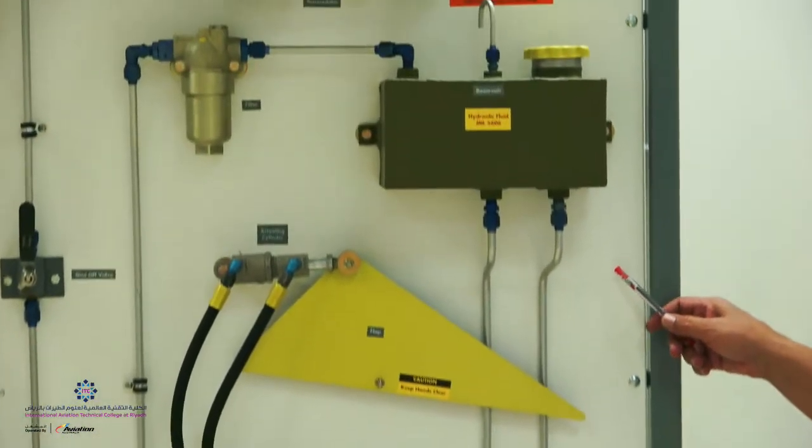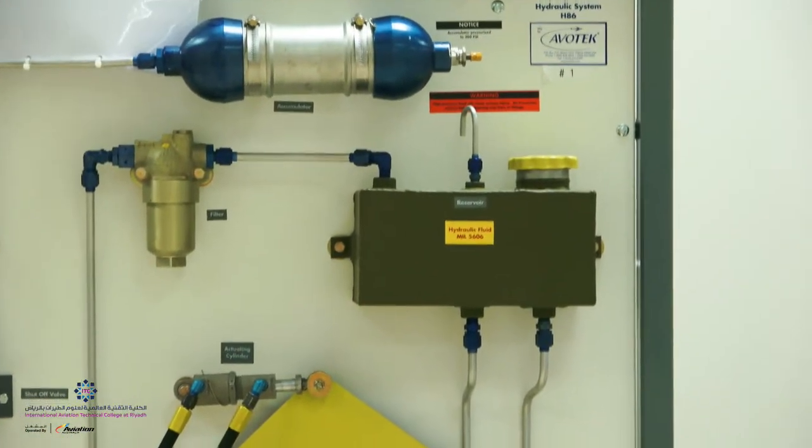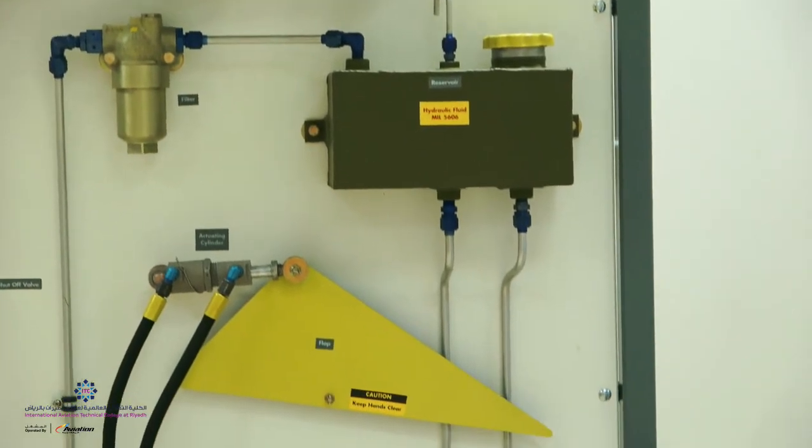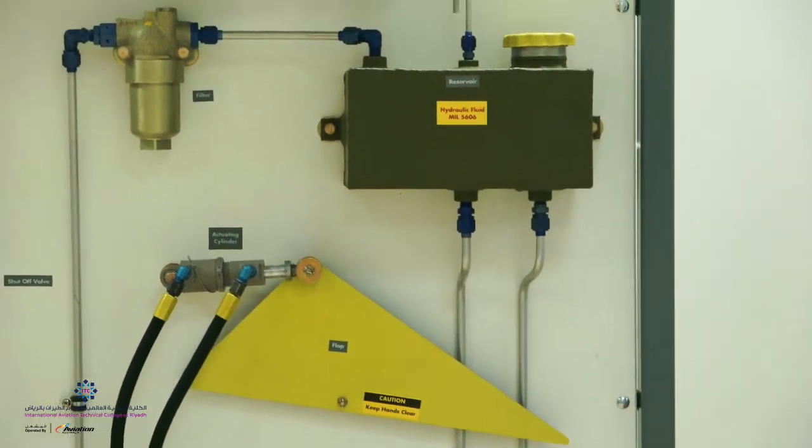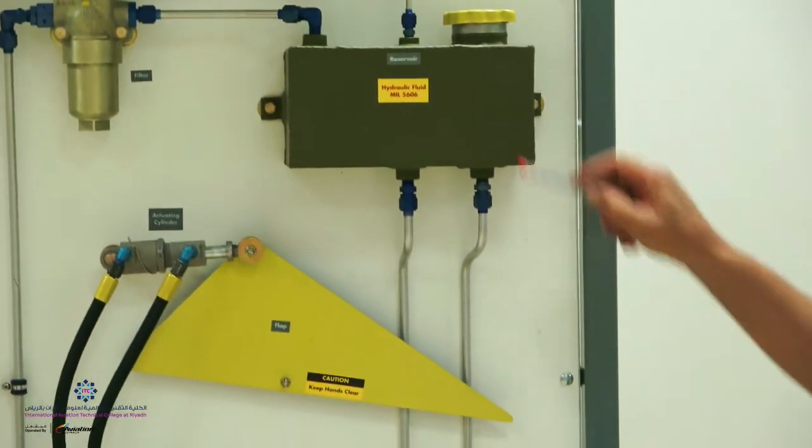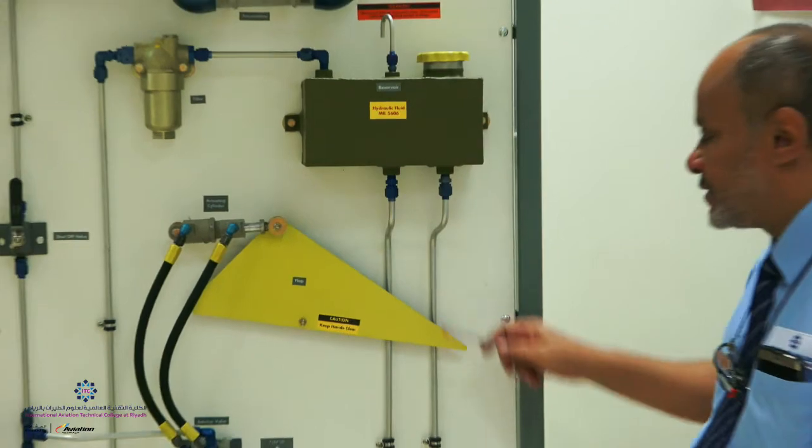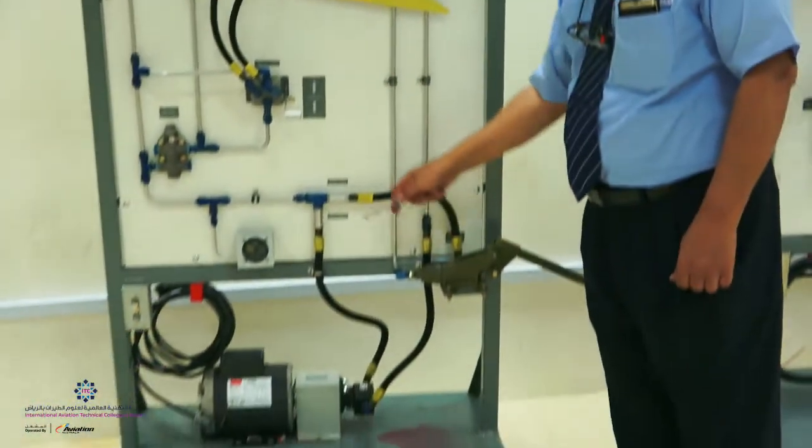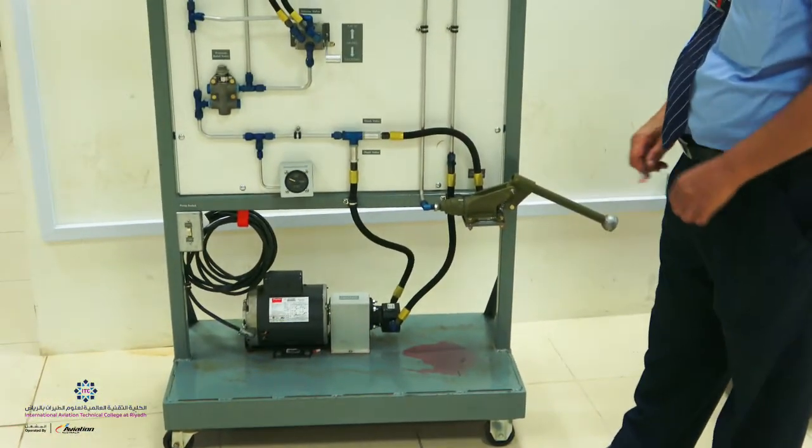On the trainer here, we see the layout of the basic components usually found in the hydraulic system, starting with the reservoir, the tank that holds the fluid, the lines as you see, and the pumps. We have two types of pumps here.